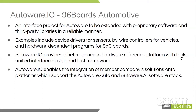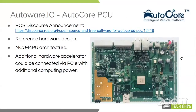For example, if a company is developing closed localization software and they don't want to release their source code, it could integrate seamlessly with Autoware — they could potentially release binaries to be used within Autoware.io. As part of Autoware.io, we now have the Autocore PCU. Autocore is a member of 96 Boards and they released these processing computing units not long ago. There is a ROS Discourse announcement linked where they made a public announcement on the PCU, detailing the different hardware and software offerings. The PCU is part of the reference hardware design for Autoware.